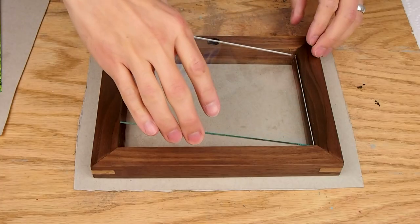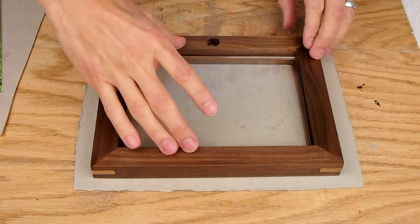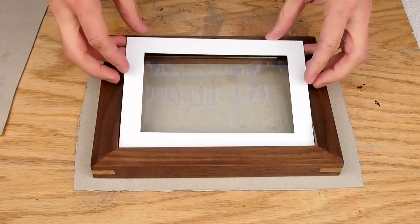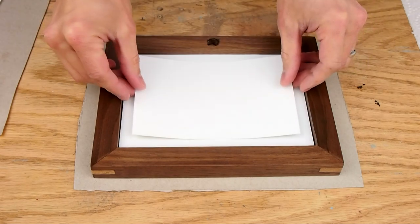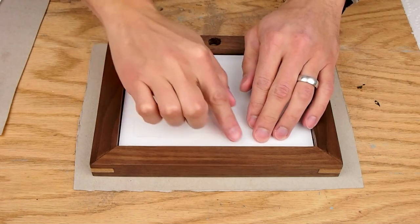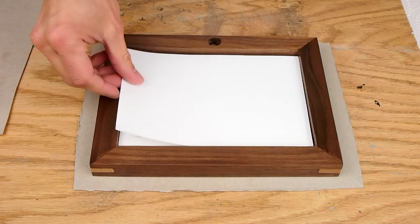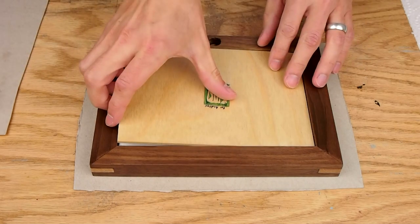Then I assembled all the parts. I put the glass in first followed by the mat and the 4x6 photograph that I taped to the mat with acid-free tape. Then a piece of acid-free backing paper and finally the plywood.